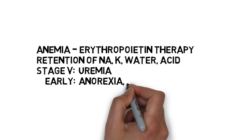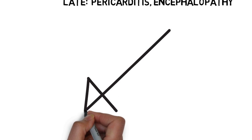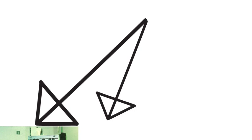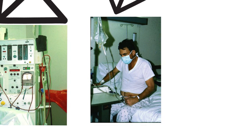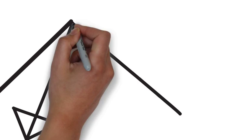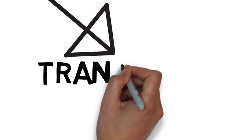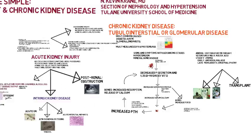Other problems in chronic kidney disease include anemia, retention of salt, potassium, and water, and the development of uremia, which starts with malaise and fatigue followed later by pericarditis, encephalopathy, and significant symptoms. Treatment is to initiate either hemodialysis, where patients need vascular access — usually an AV fistula — or home peritoneal dialysis, where patients exchange fluid through the peritoneum. Finally, patients may require transplant, which is the ideal treatment for end-stage renal disease.